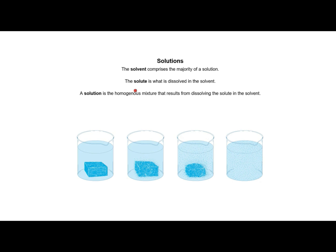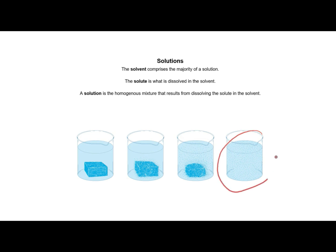Here is a simple illustration of making a solution. The solvent is the liquid, and the solute is whatever the cube is comprised of. The solute starts to dissolve, continues to dissolve, and then finally it is fully dissolved in the solvent, giving us a homogeneous mixture. If we assume the solvent is water and this is a sugar cube, then you have made a sugar solution.